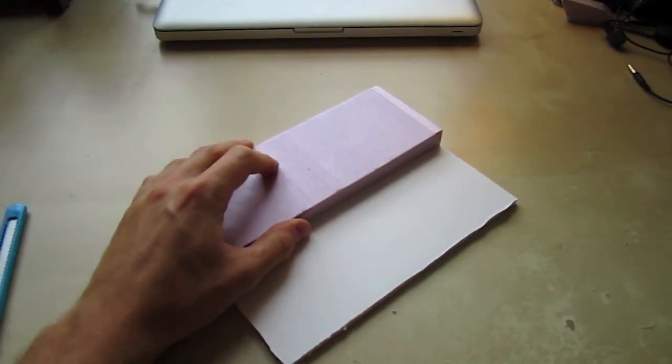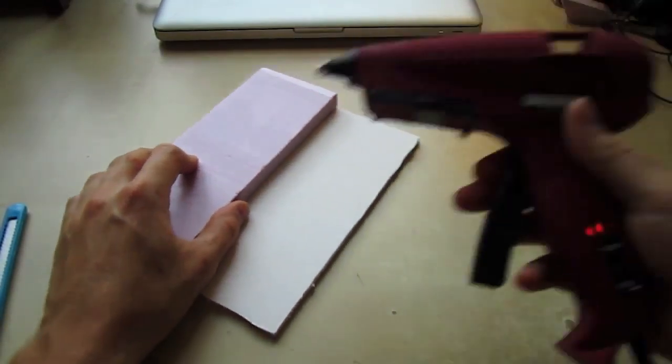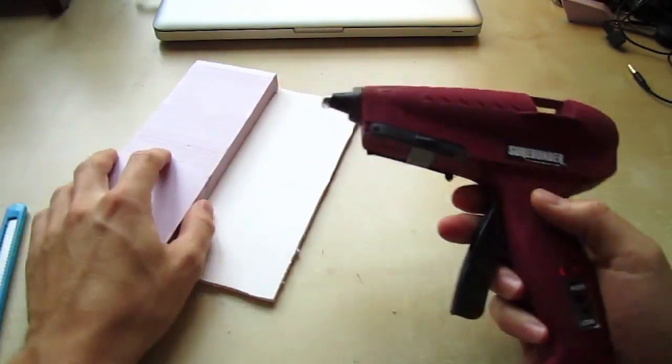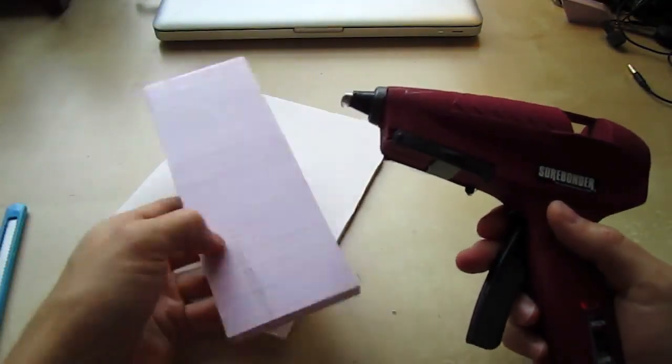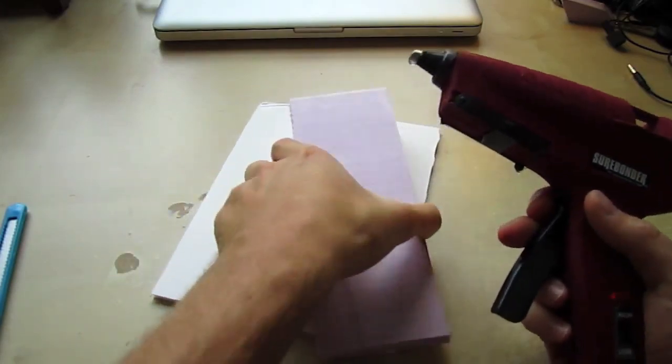So what I do first is I glue it down to the board using hot glue and low temperature. Make sure you guys use low temperature when you're using the pink foam or else it will melt it. So I'm just going to glue this down.